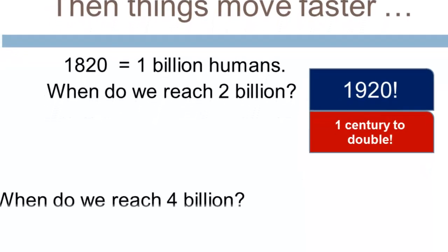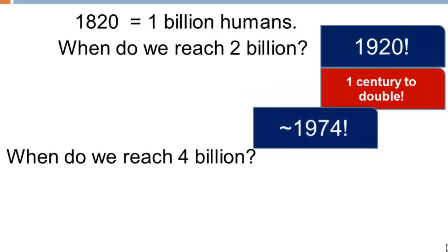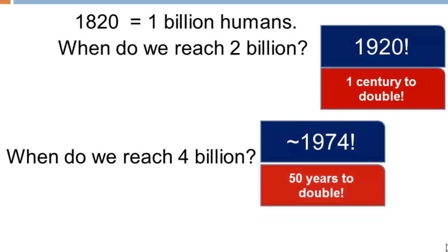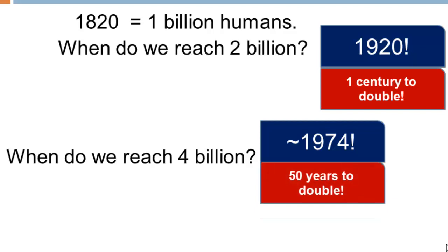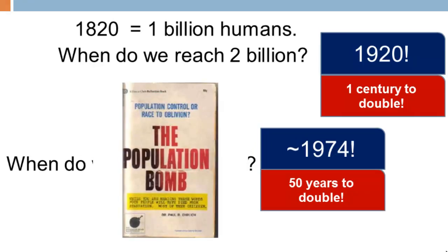When do we reach four billion? Roughly around 1970 — the population doubled again in just 50 years. This is clearly an exponential growth curve, and it's around this time that 'The Population Bomb' by Paul Ehrlich was published, and scientists began to worry a great deal about human population growth and what is sustainable.